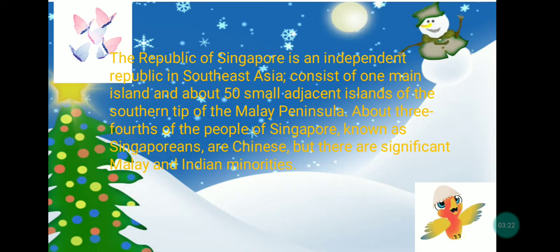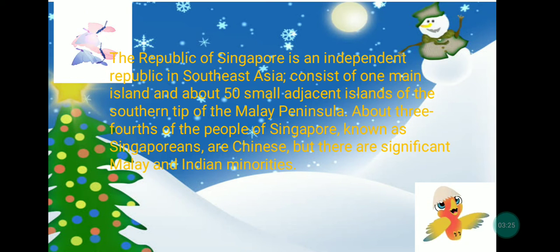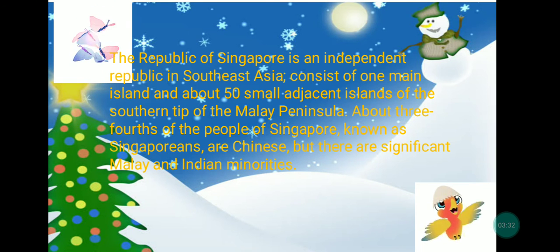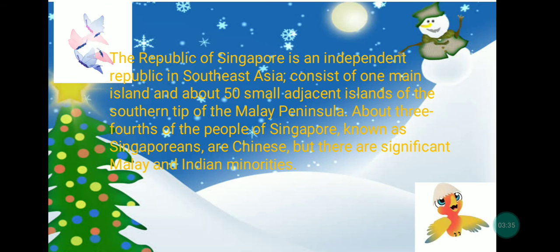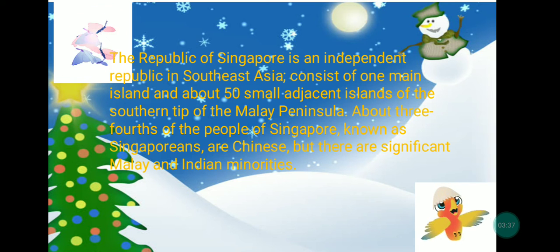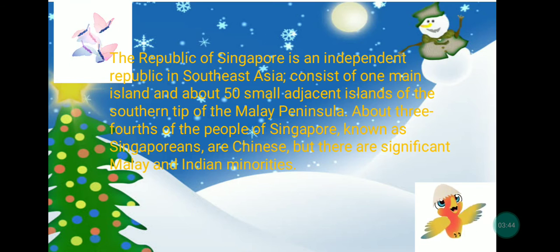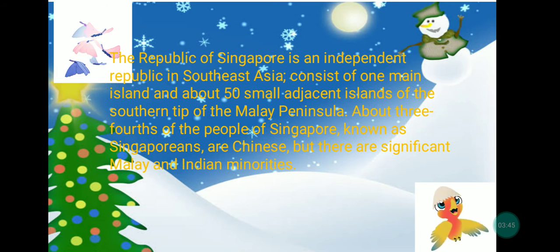The Republic of Singapore is an independent republic in Southeast Asia, consisting of one main island and about 50 small adjacent islands at the southern tip of the Malay Peninsula. About three-fourths of the people of Singapore, known as Singaporeans, are Chinese, but there are significant Malay and Indian minorities.